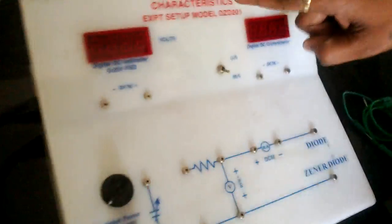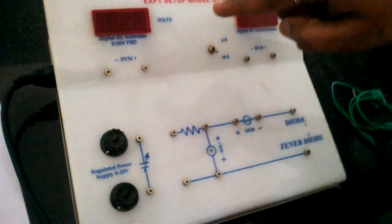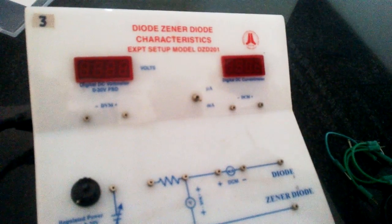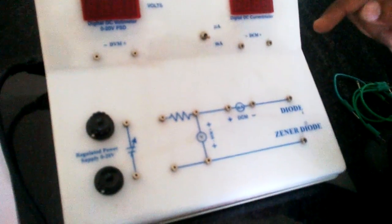This is Zener Diode characteristics. In this experiment, we are going to calculate knee voltage in forward bias and breakdown voltage in reverse bias.